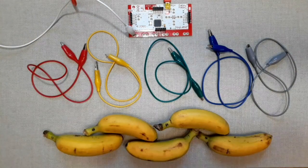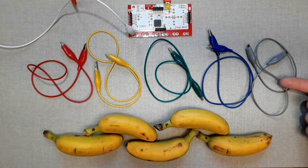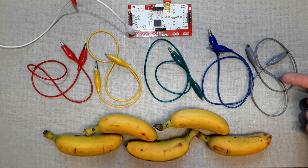Step 3. Now we gather the rest of our components. We've got our Makey Makey Board, five alligator clips, and five bananas.